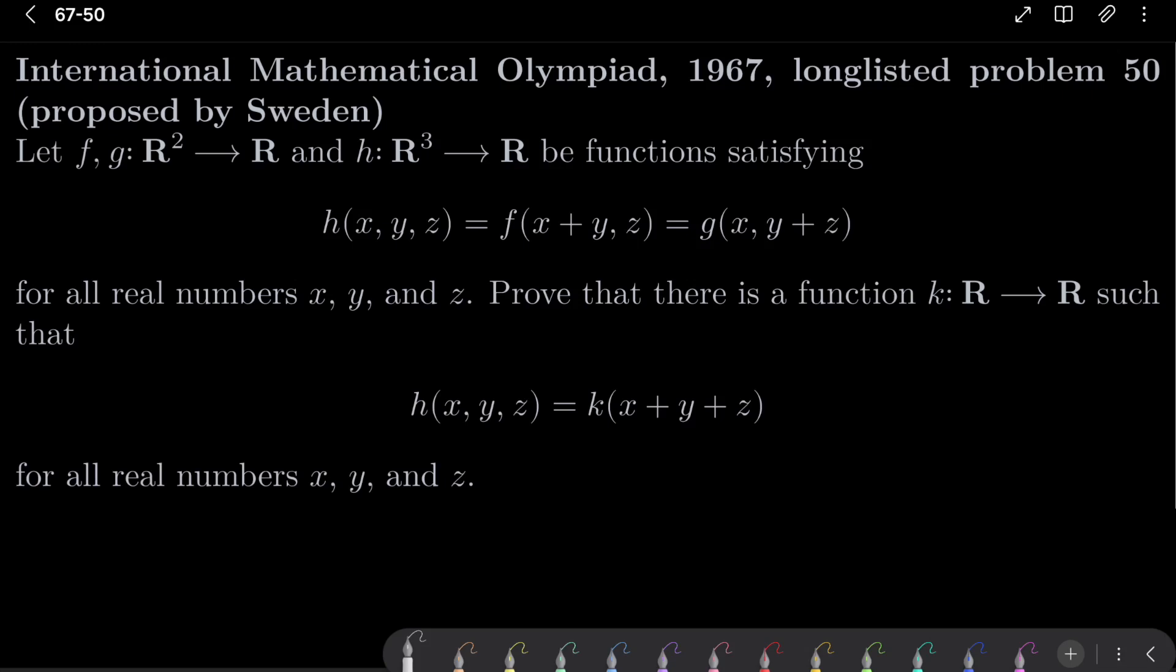We wish to prove that there is a function k which takes just one argument, it goes from R into R, such that h(x,y,z) = k(x+y+z) for all real numbers x, y, and z.